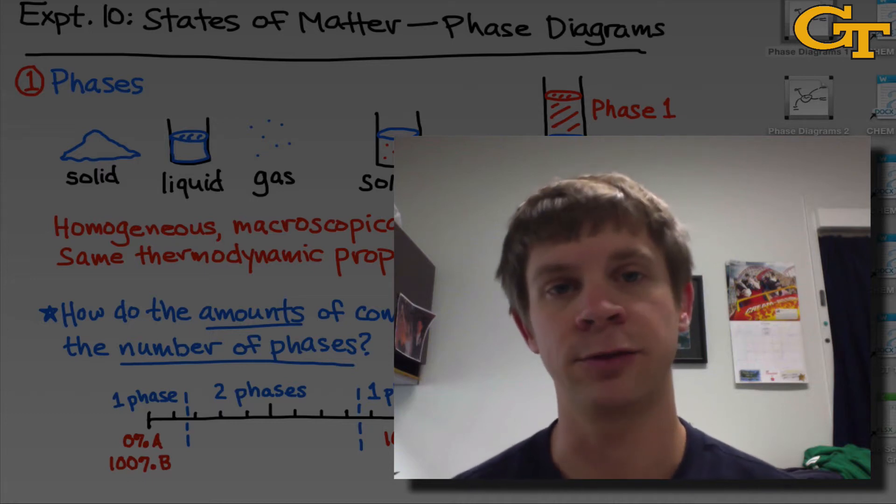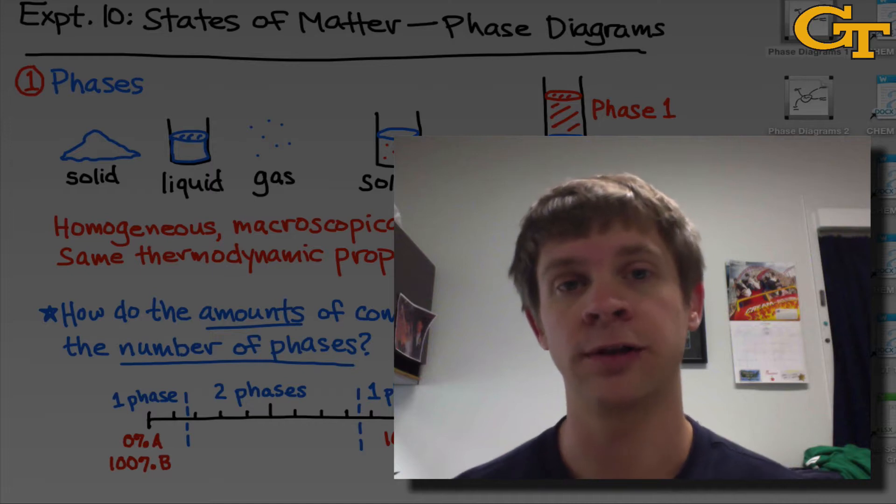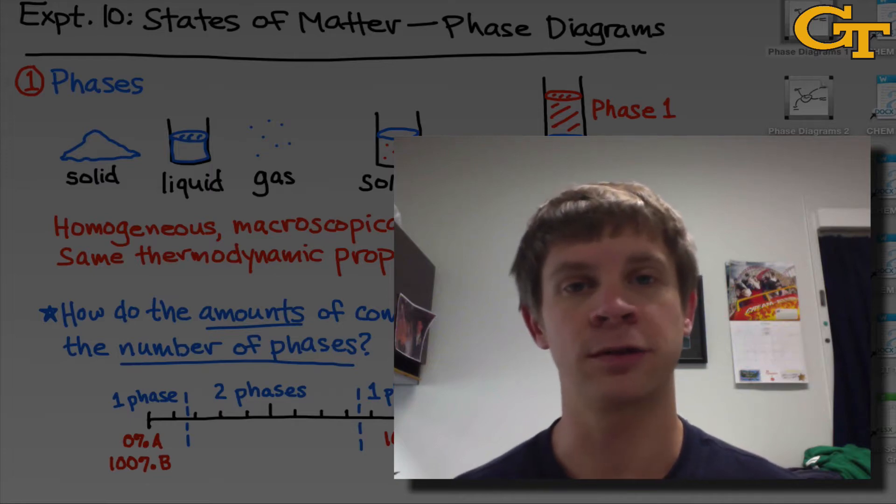In physical chemistry, a phase is a uniform homogeneous chunk of matter that need not be made of only one thing. It can contain multiple components, but the important point is that from a thermodynamic perspective, a phase has uniform properties across its full extension and uniform composition.